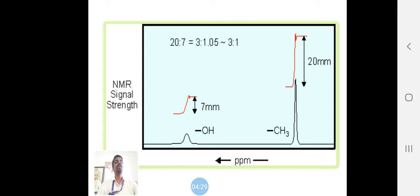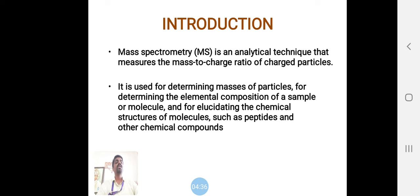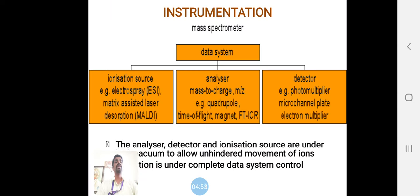During mass spectroscopy, it is used to determine the mass to charge ratio. We determine many molecular compositions and chemical structure through mass spectroscopy. Mass of the molecule will be calculated through these techniques. This is the instrumentation.